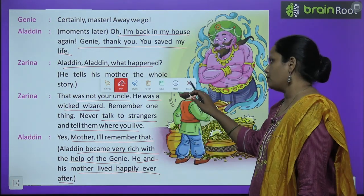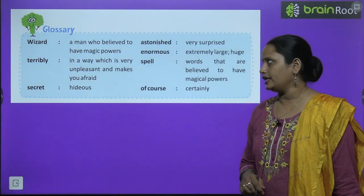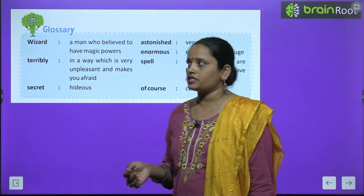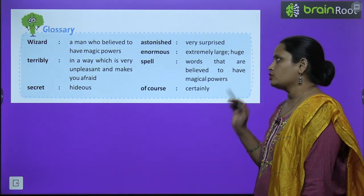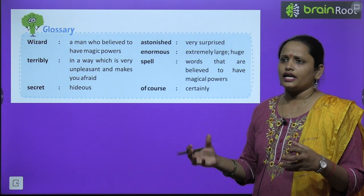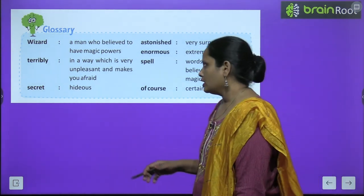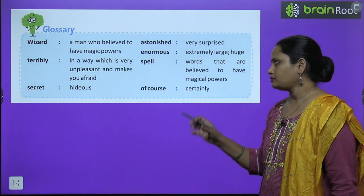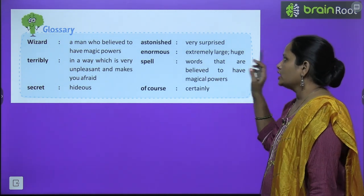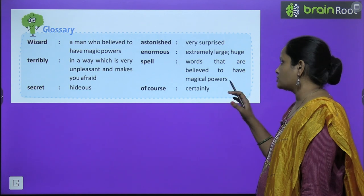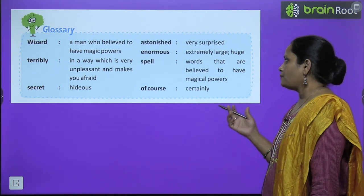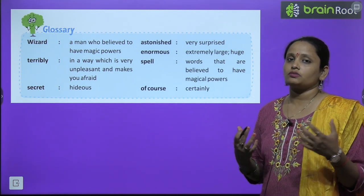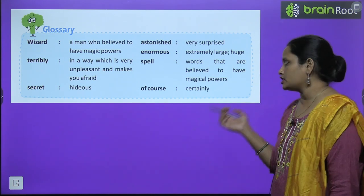Now let's move on to the glossary. Wizard: a man who is believed to have magic powers — ek insaan jiske paas magical powers hote hain. Terribly: in a way which is very unpleasant and makes you afraid. Secret: hidden. Astonished: very surprised. Enormous: extremely large, huge. Spell: words that are believed to have magical power. Of course: certainly.